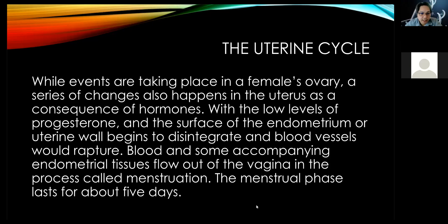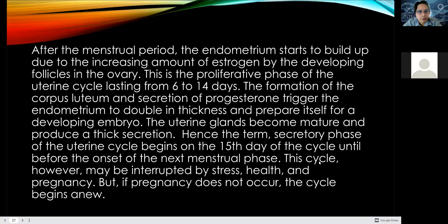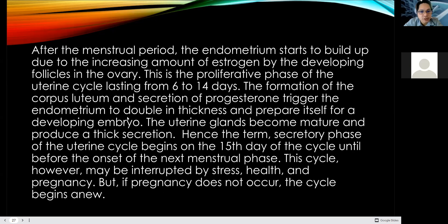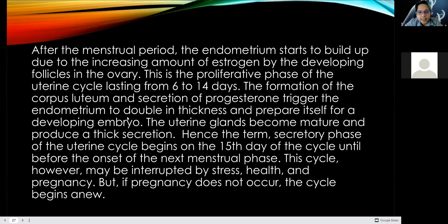The menstrual phase lasts about five days. After the menstrual period, the endometrium starts to build up due to an increased amount of estrogen again from the developing follicles in the ovary — this is the proliferative phase of the uterine cycle, which lasts from day six to day 14. The formation of the corpus luteum and the secretion of progesterone trigger the endometrium to double in thickness and prepare itself for the developing embryo.